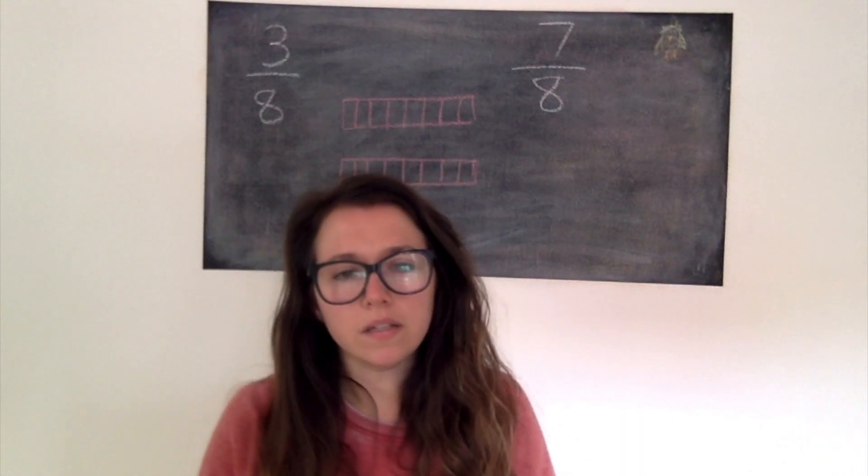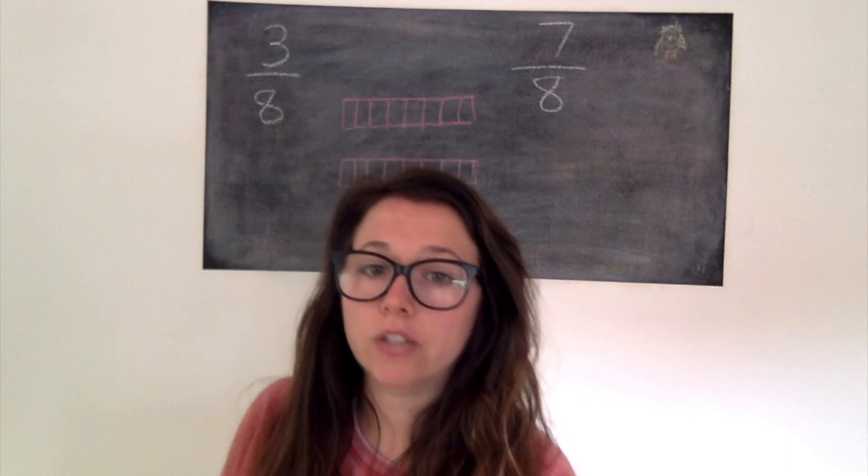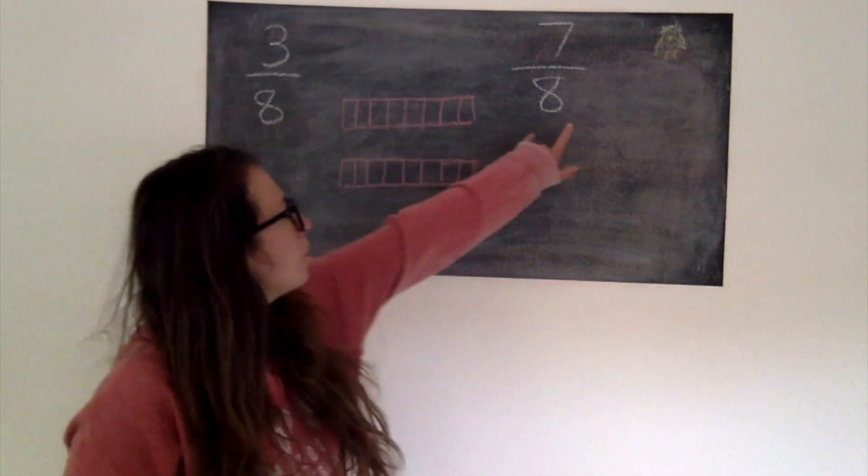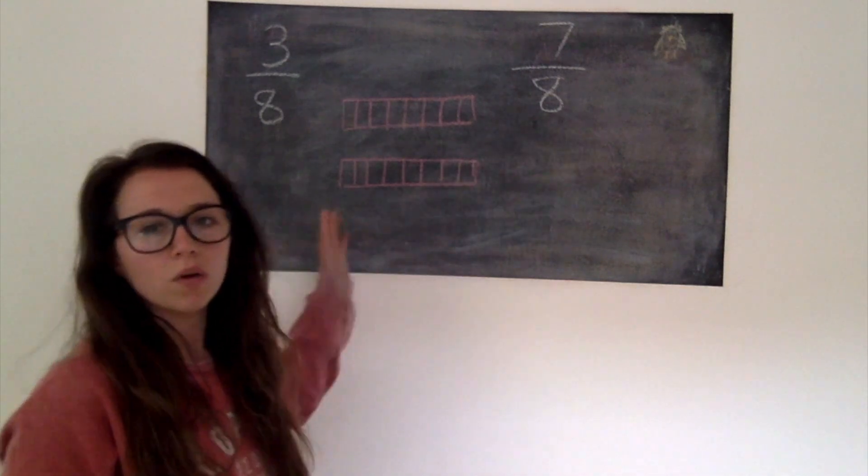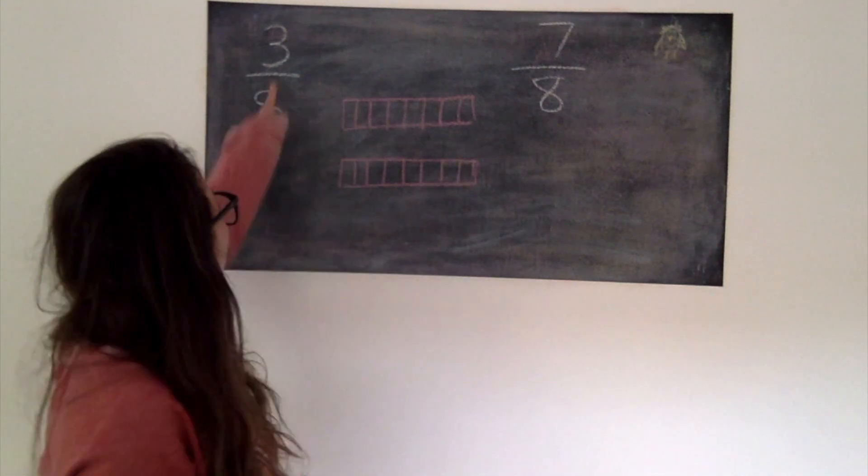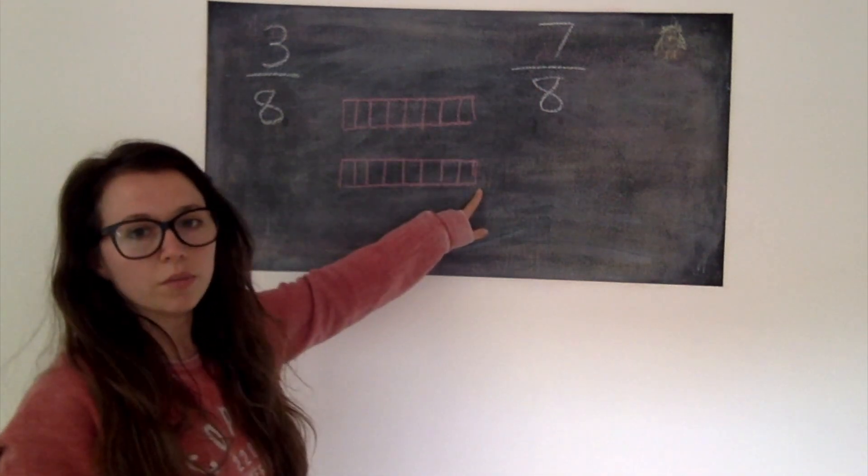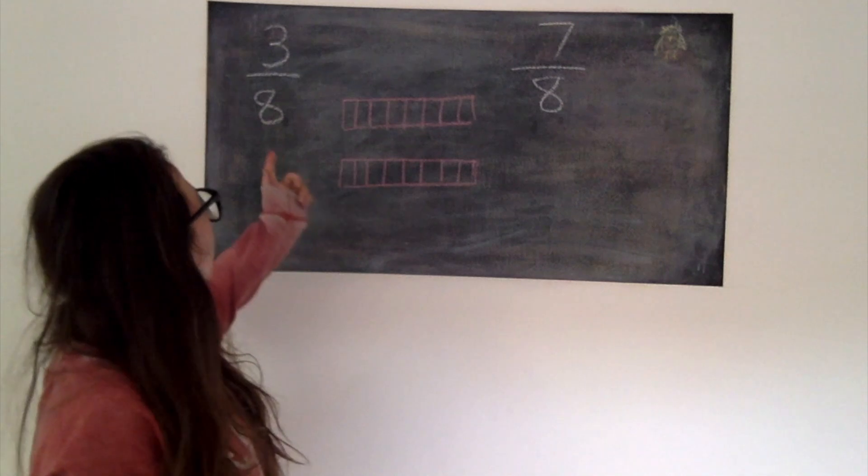Okay we're now going to start by comparing two fractions that have the same denominator. So remember that's our bottom number here. It's how many pieces my whole is broken into. So I've got 3/8ths and 7/8ths. I've drawn both of my bar models with the denominator of 8 and I'm going to shade them in.